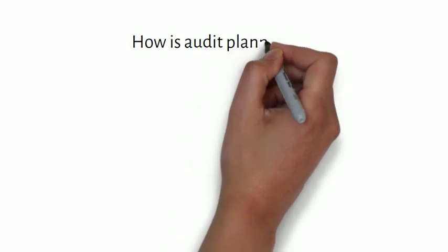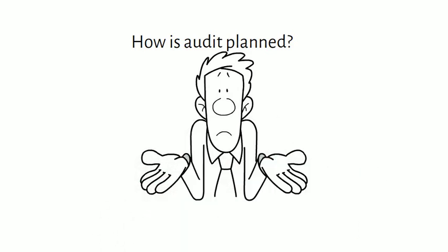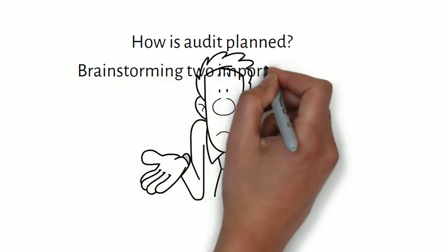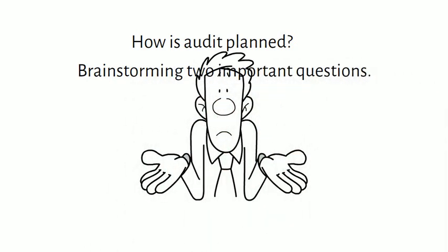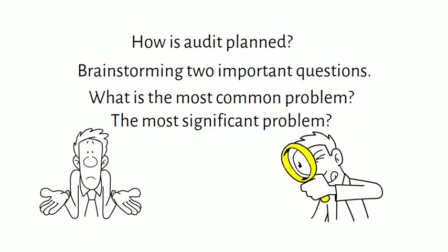Audit is planned by brainstorming two important questions: what is the most common problem we are seeing in our patients, and what is the most significant problem? These two should have a matching point, because for example the most common problem may be anemia whereas the most significant problem may be doing cesarean sections in primics. We have to match the two topics into one question that has importance in patient care and also has guidelines for making a comparison.